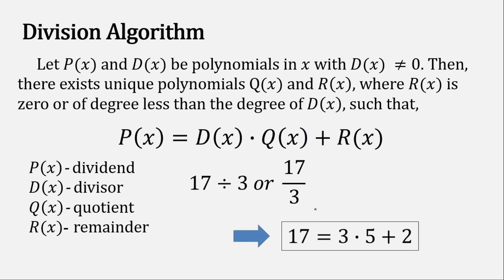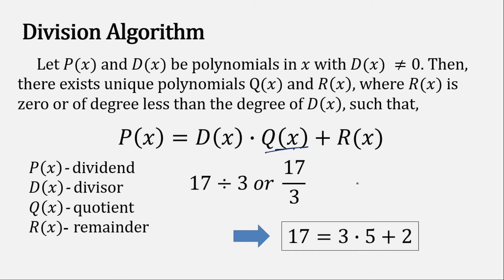This is the case in polynomials. If we want to write it using the division algorithm, 17 is equal to 3 times 5 plus 2. In polynomials, the remainder should be 0 or have a degree less than the divisor, in order for it to take this form.